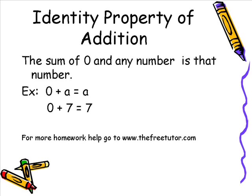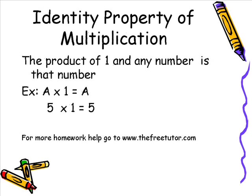The next property is the identity property of addition, which says the sum of 0 and any number is that number. For example: 0 plus A equals A. If we change A to 7, then 0 plus 7 equals 7. Next, the identity property of multiplication says the product of 1 and any number is that number. A times 1 equals A. If we change A to 5, then 5 times 1 equals 5.